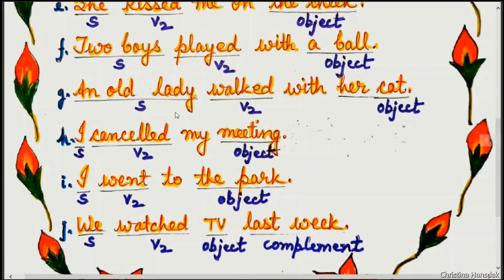Example G: An old lady walked — subject is 'an old lady', 'walked' is V2, and 'cat' is the object. Example H: I cancelled my meeting. 'I' is the subject, 'cancelled' is V2, and 'meeting' is the object.